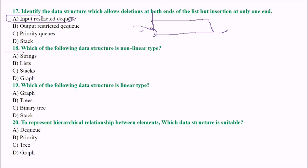Next: which of the following data structures is of non-linear type? The answer is graph. And which of the following data structures is of linear type? Graphs, trees, and binary trees are all non-linear, so the answer is D — stack.